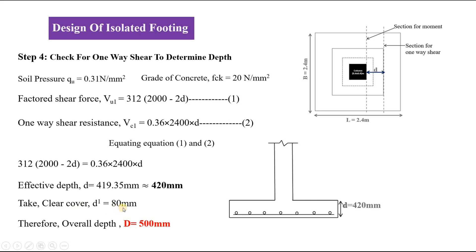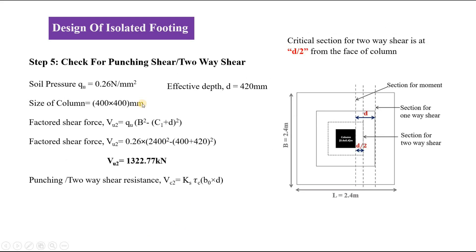The clear cover for a footing is assumed as 80 mm, so the overall depth of the footing is 500 mm. Now we have the size and depth of the footing. Before finding the area of steel, we check whether the provided depth is safe against punching shear (two-way shear). The critical section for two-way shear is taken at D/2 from the face of the column.